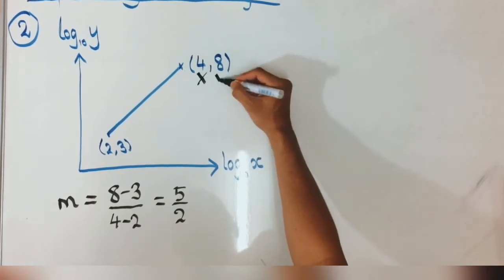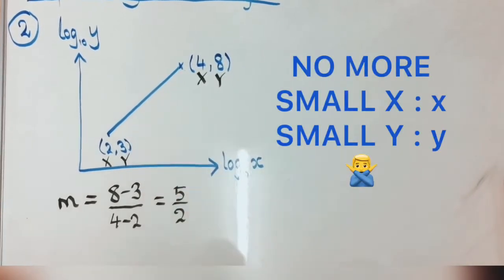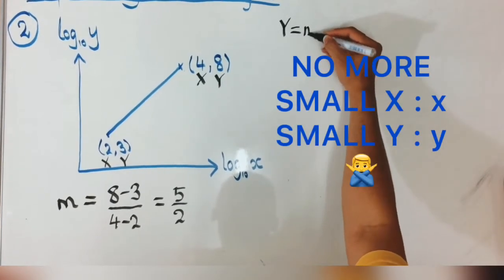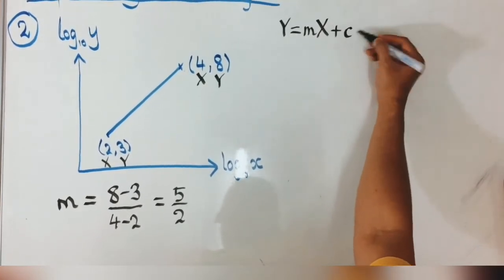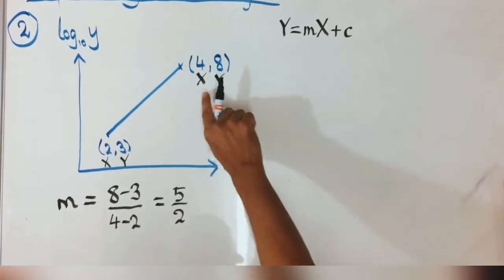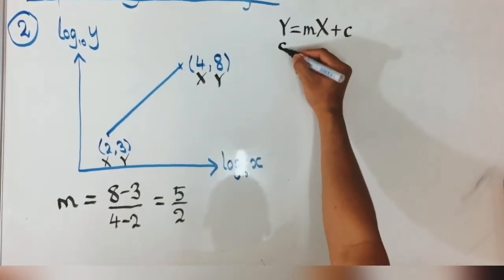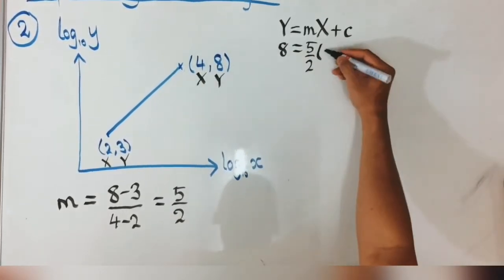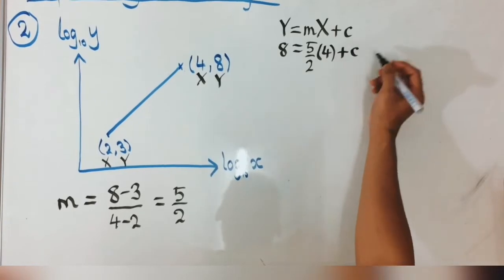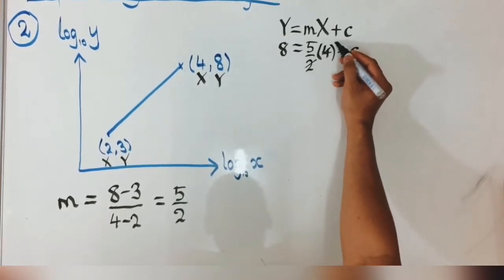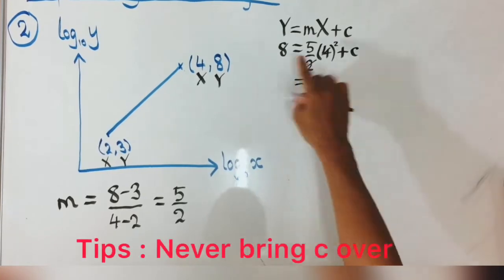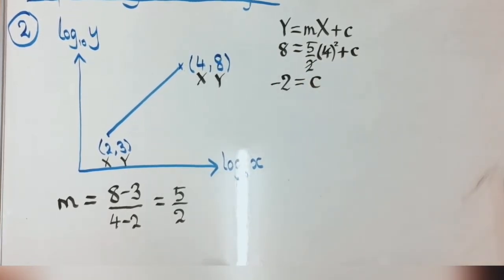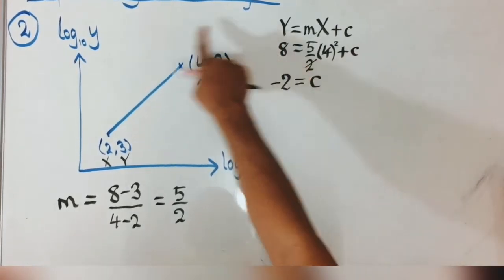Label the axes as capital X and capital Y — no more small x and small y. Substituting into capital Y equals m times capital X plus c, we choose the point (4, 8). So 8 equals (5/2) times 4 plus c, which simplifies to 8 equals 10 plus c. Bringing over: c equals 8 minus 10, which gives c equals negative 2.